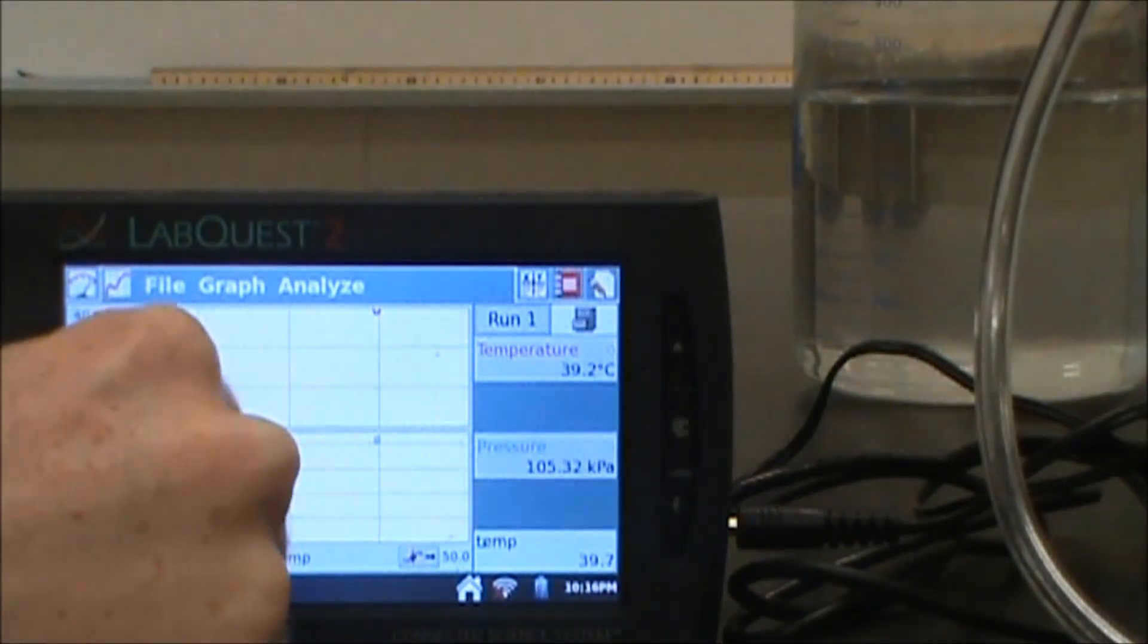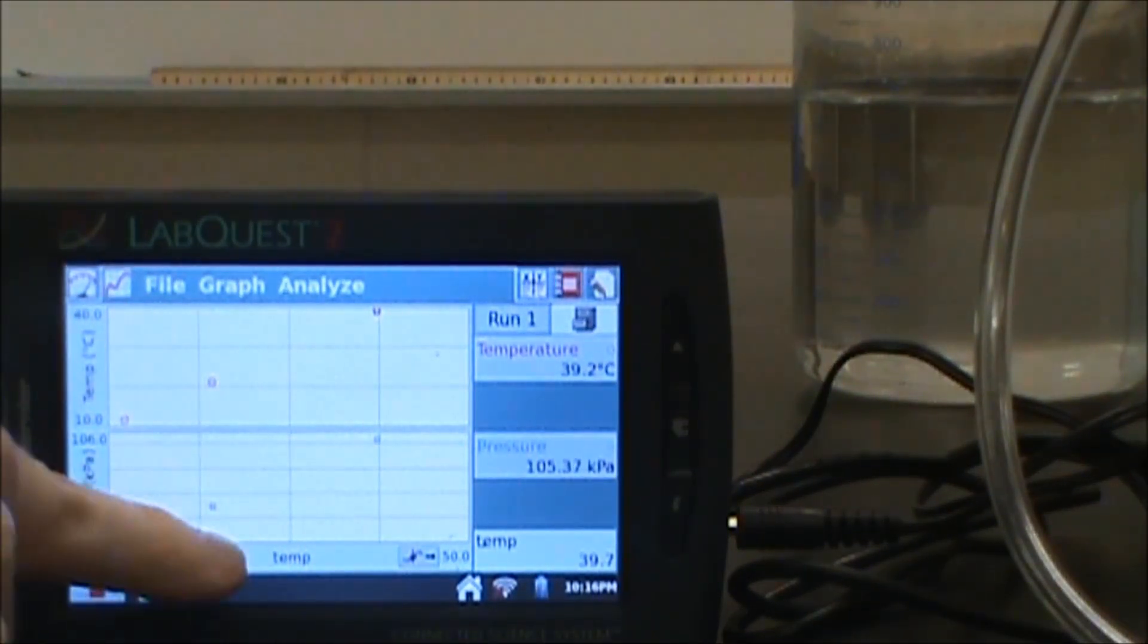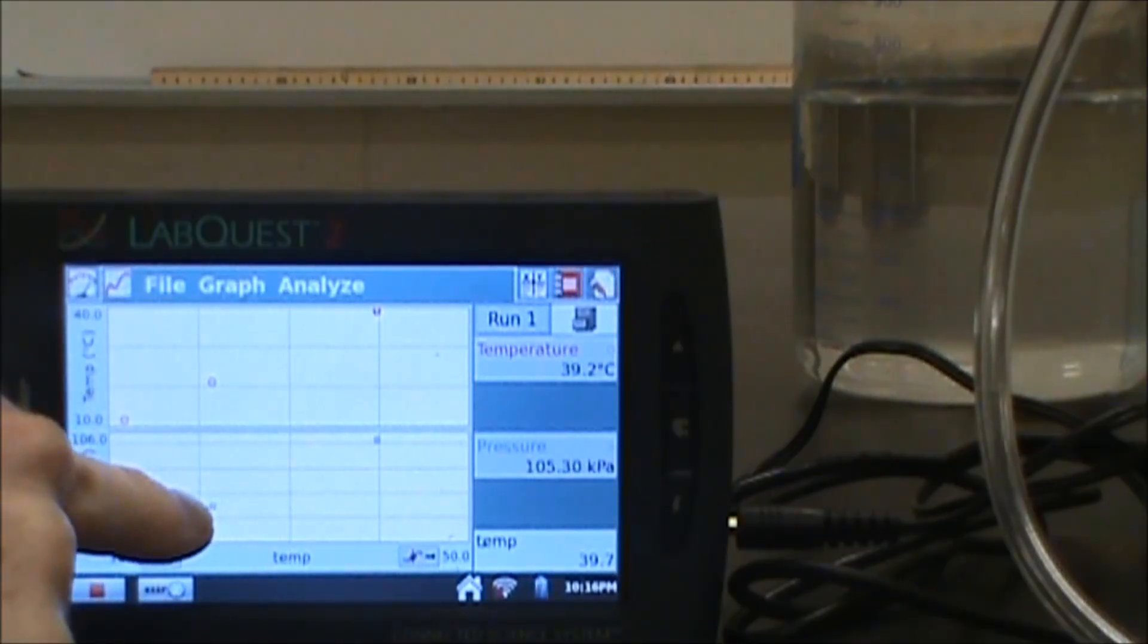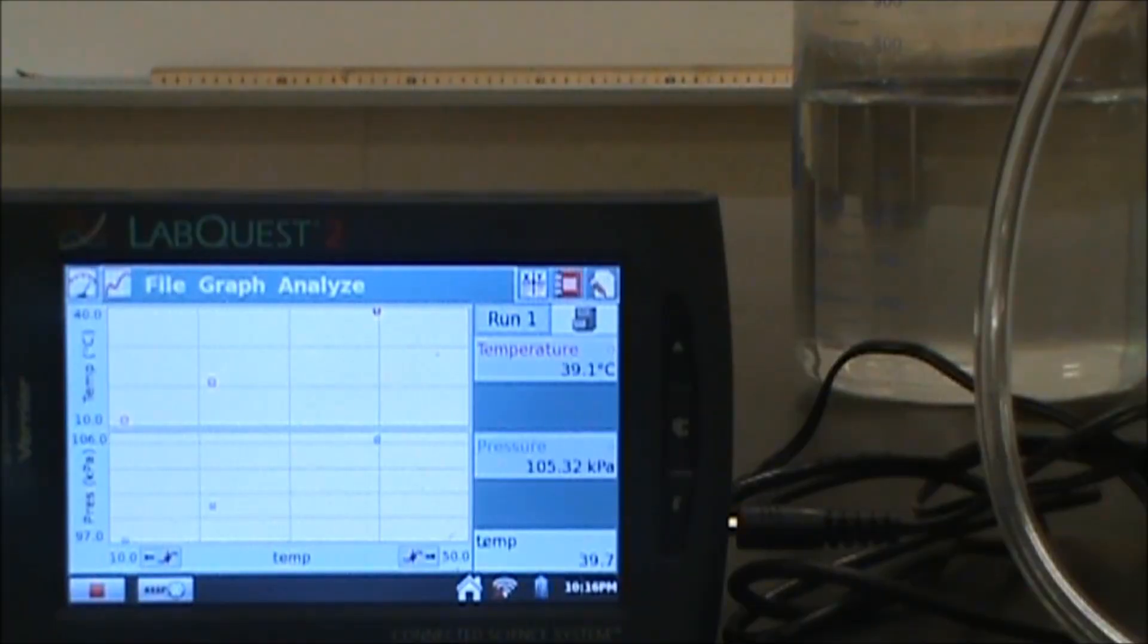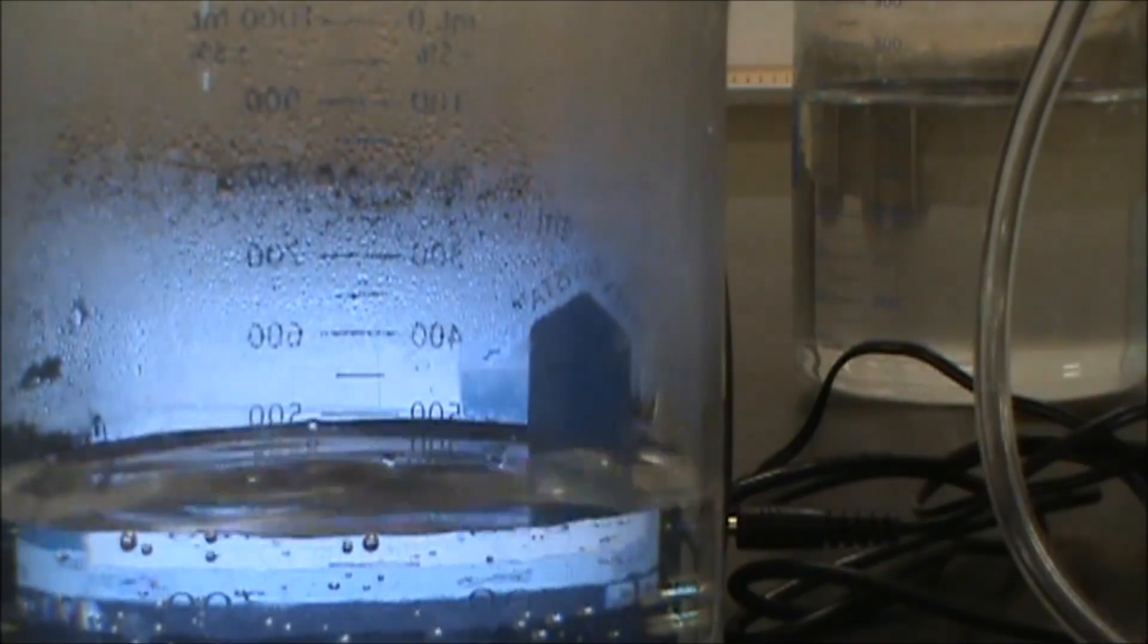Now I've got my three data points and I'm looking at the pressure and temperature. Here's the first temperature, second and third, and the first pressure, second pressure and third. Now I'm going to take my hot water, which is in here, just getting close to boiling.